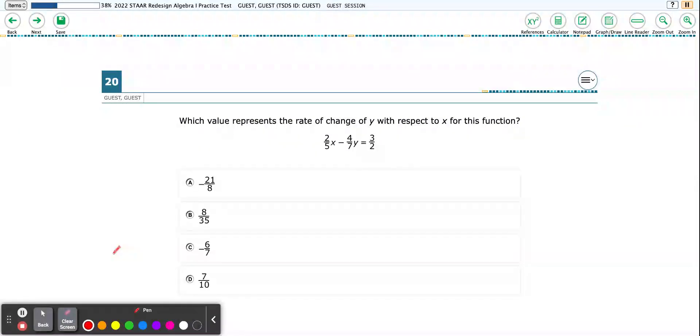As we move through our test, we come to number 20, and it says which value represents the rate of change. Remember, another word for rate of change is slope of y with respect to x for this function.